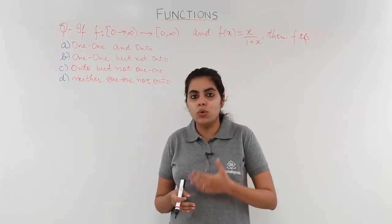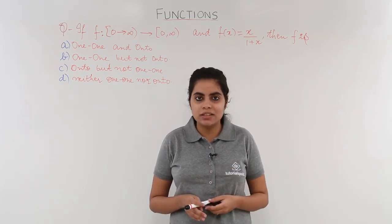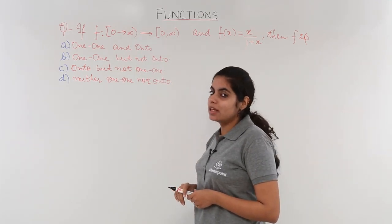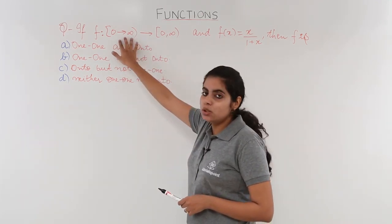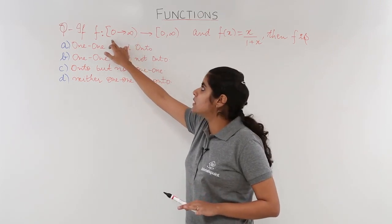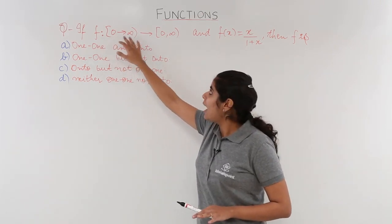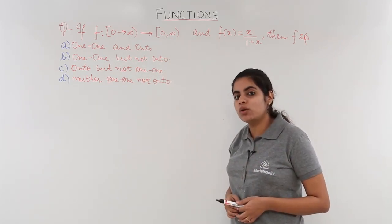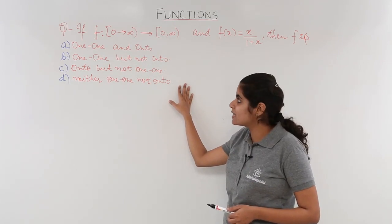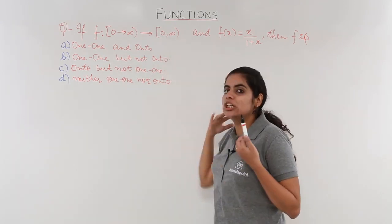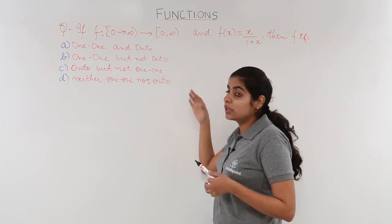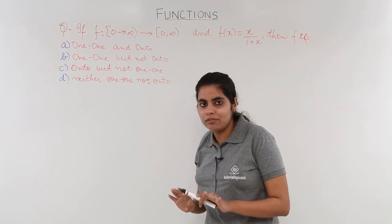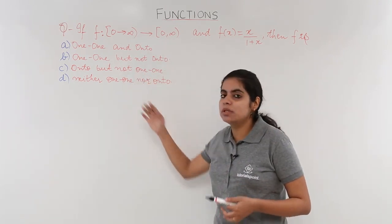Let's read the question, go through the options, and get started with the solution. The function is given with domain zero to infinity — zero is included since it is a square bracket — and the co-domain is also zero to infinity. We have to check which of the four options is correct: one-one and onto, one-one but not onto, onto but not one-one, or neither one-one nor onto.